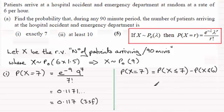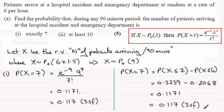And if you look up these values, for seven you should find you get 0.3239 and then for six, being less than or equal to six, that probability is 0.2068. So that when we subtract these two you end up with 0.1171 which again I'll give to three significant figures is 0.117 to three sig figs.